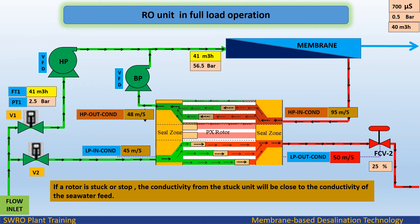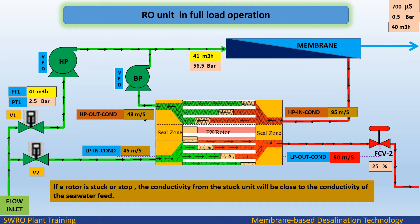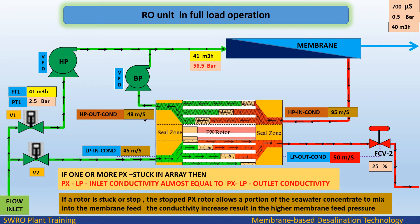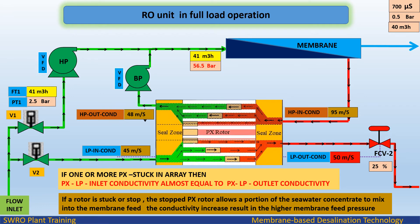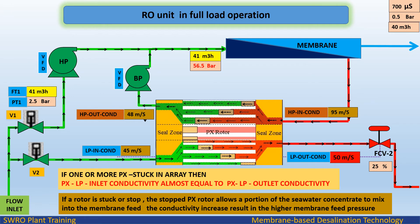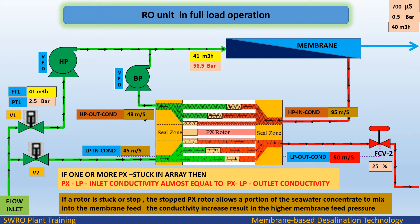If a rotor is stuck or stopped, the conductivity from the stuck unit will be close to the conductivity of the seawater feed. If one or more PX are stuck in the array, PXLP Inlet Conductivity will be almost equal to PXLP Outlet Conductivity. The stopped PX rotor allows a portion of the seawater concentrate to mix into the membrane feed, causing a conductivity increase that results in higher membrane feed pressure.